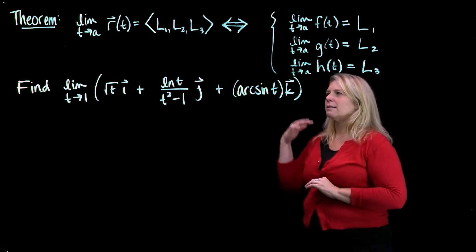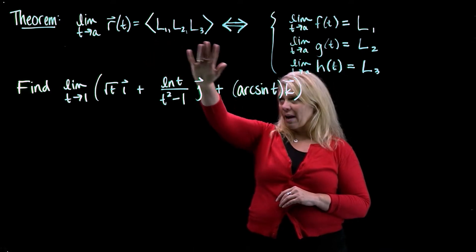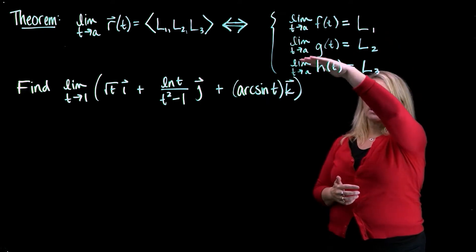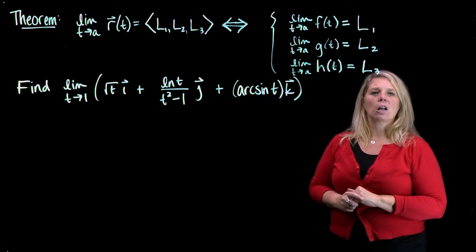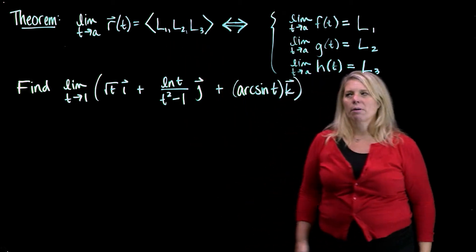And it says that the limit of a vector-valued function is a vector, an actual vector, if-and-only-if the limits of the component functions all exist and are the components of this vector that we're interested in here.